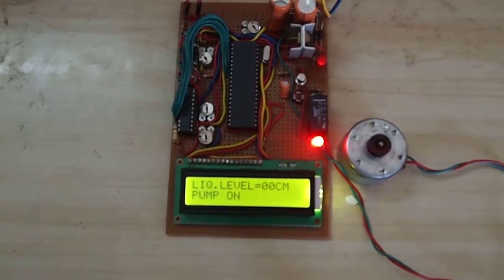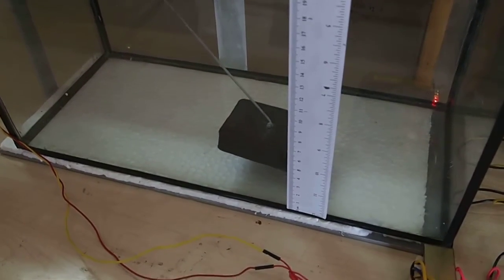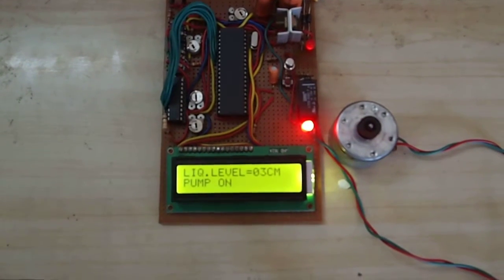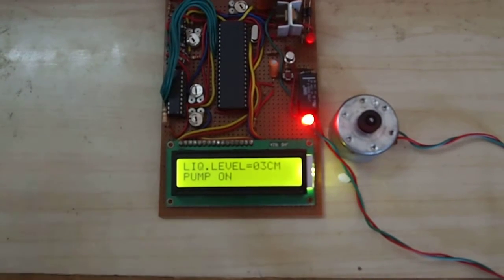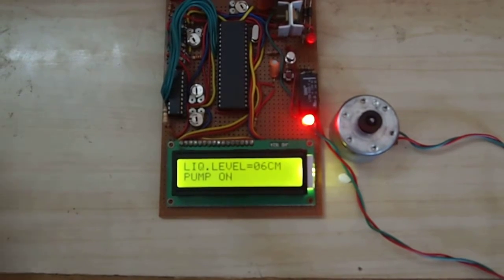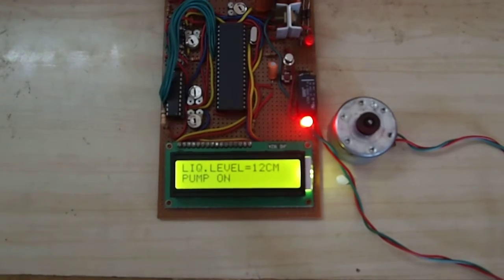Now the shaft will be slowly lifted up, and you can see the reading is increasing. Now it is 3 cm, and gradually as the shaft rises up, the liquid level is also increasing to 12 cm.